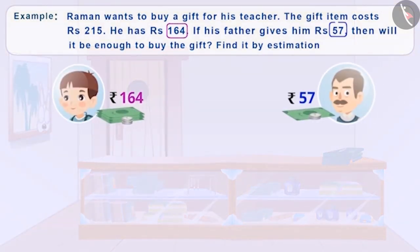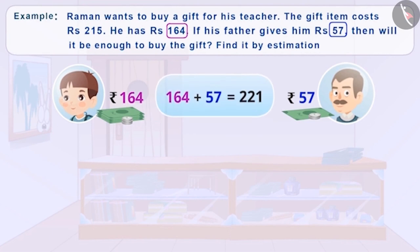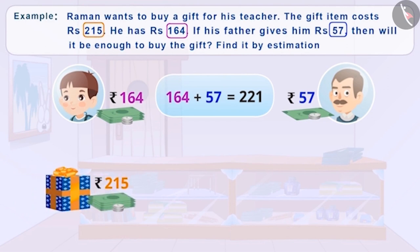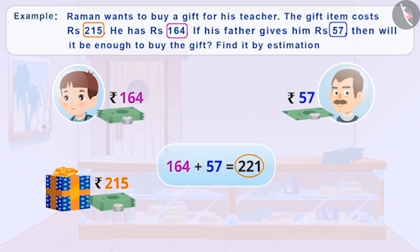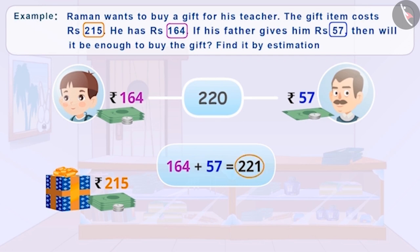By adding Raman's money with the amount he got from his father, we get Rs. 221. If we compare it with the cost of the gift, we can find whether it is enough or not. But this is not required here. Rough estimation saves time and helps in comparison as well. Therefore, we will find the value nearest to the result.